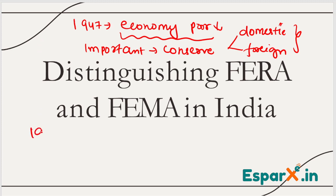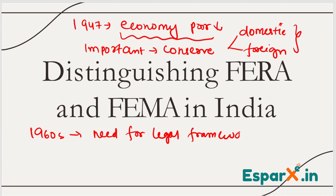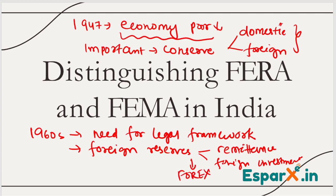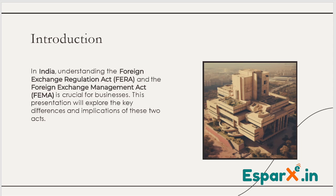So around the 1960s, around 1961-62, there was a need for some legal framework — some rules and laws — about how we can manage the foreign reserves. How to save the foreign currencies, the dollars, the external currencies, so that we can trade with the world, handle remittances, allow foreign investment, and manage foreign exchange overall. So there was a need for some regulations.